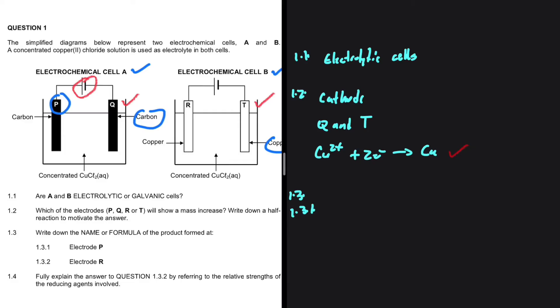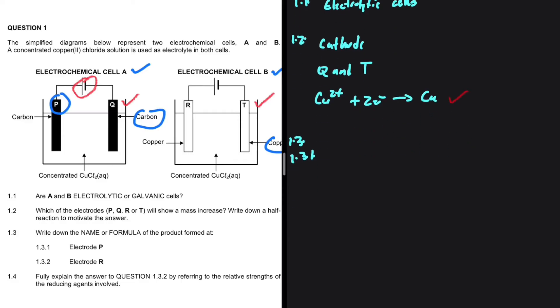P is the anode and Q is the cathode. So we have P being our anode and Q being the cathode. This is probably the most important part of the video. This is exactly what I want you to learn.